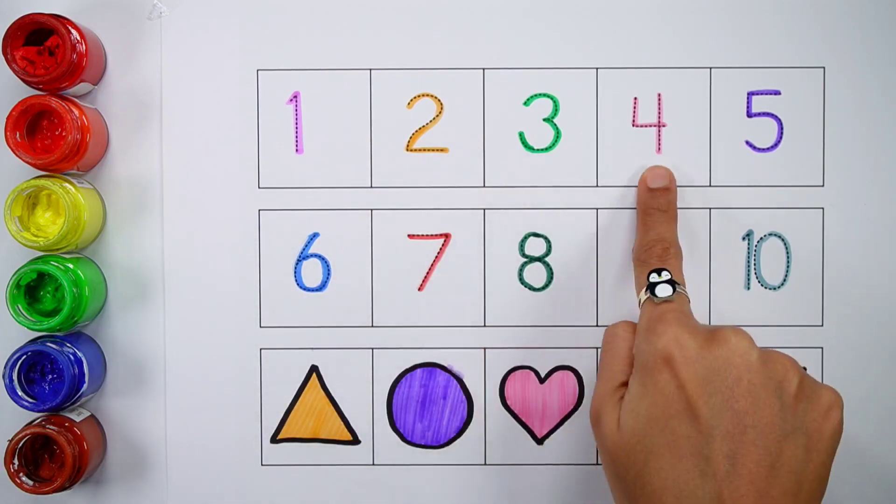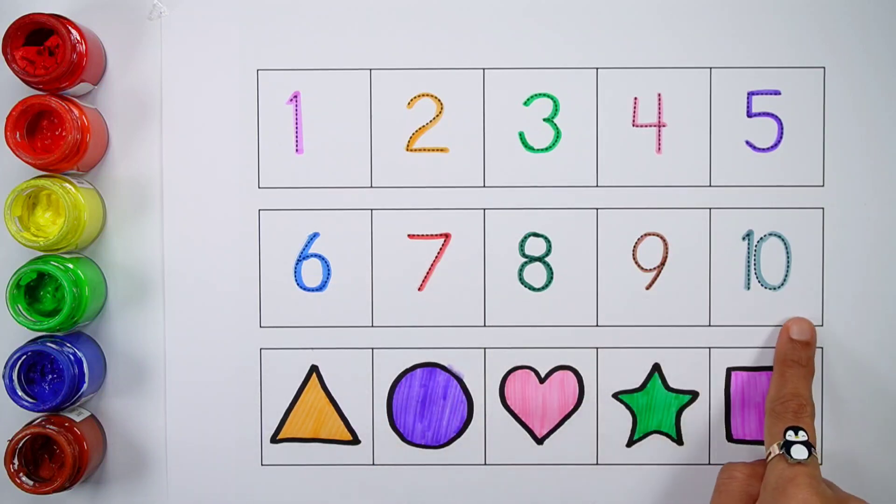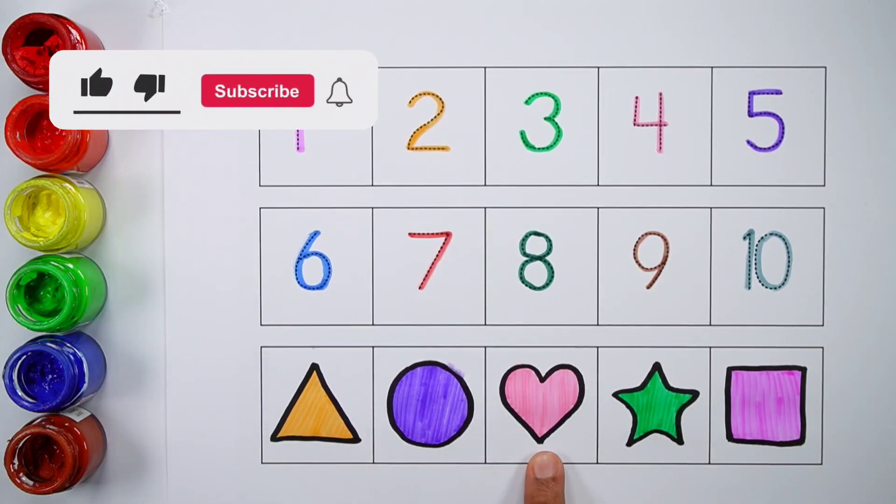One, two, three, four, five, six, seven, eight, nine, ten. Triangle, circle, heart, star, square.